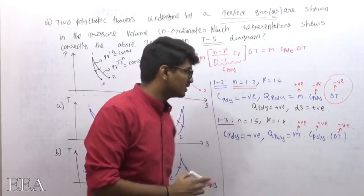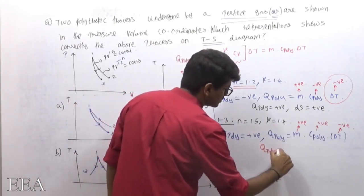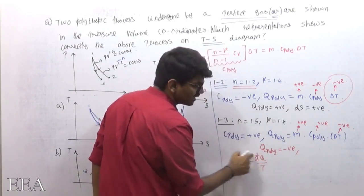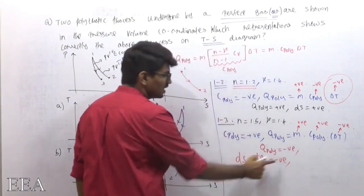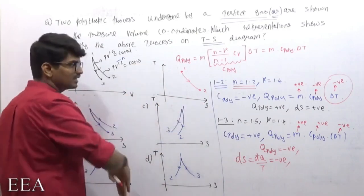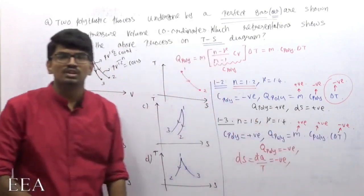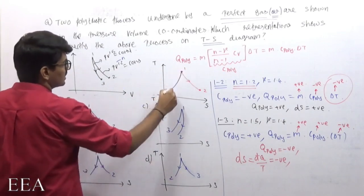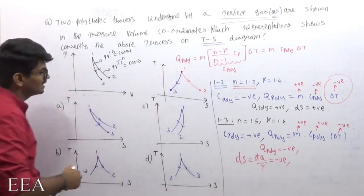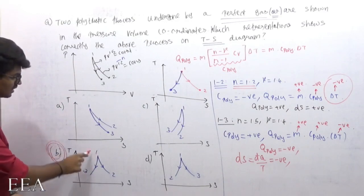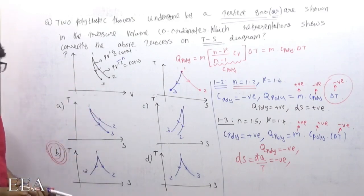Since c_poly is positive and ΔT is negative, q_poly becomes negative. Therefore ds = dQ / T is negative, meaning entropy decreases. Both temperature and entropy are decreasing, so the 1→3 curve slopes downward from right to left on the TS diagram. This matches option B.